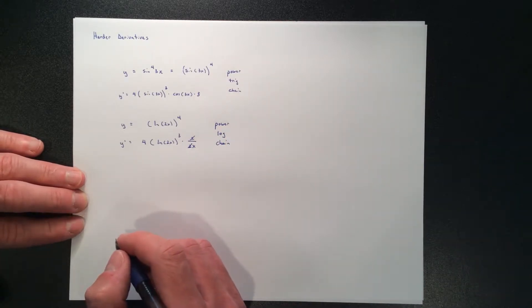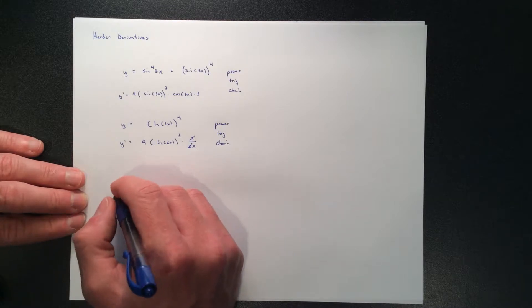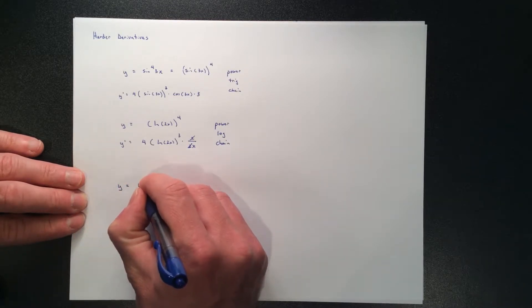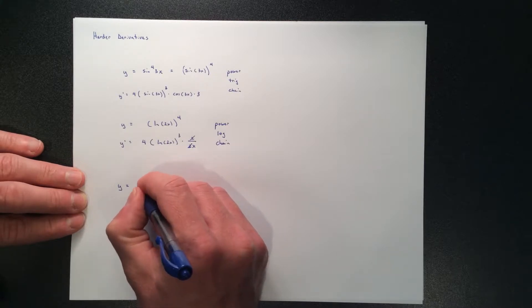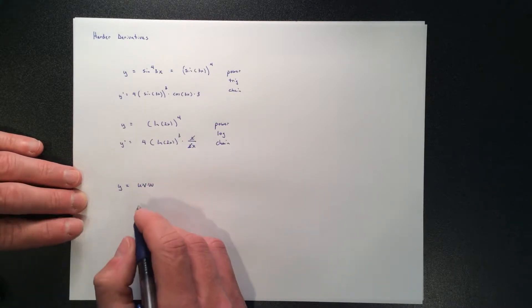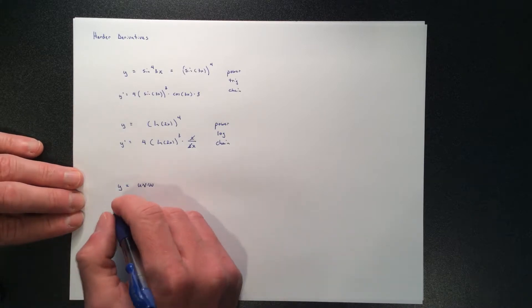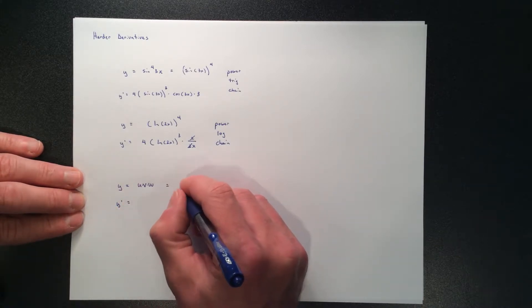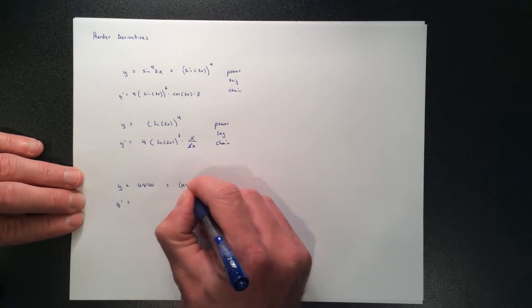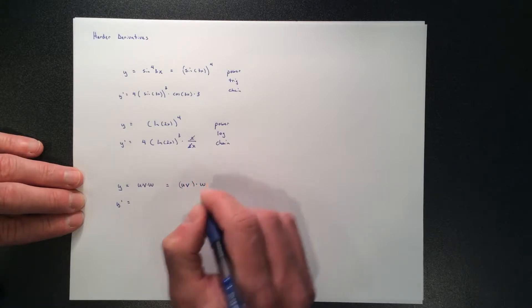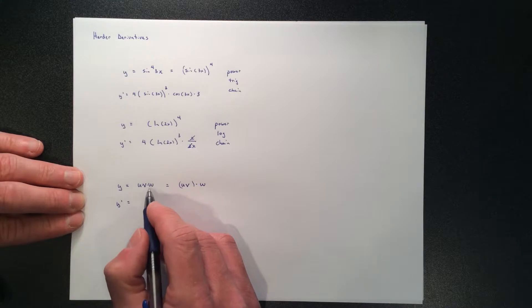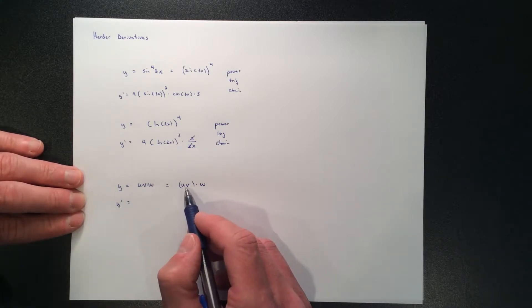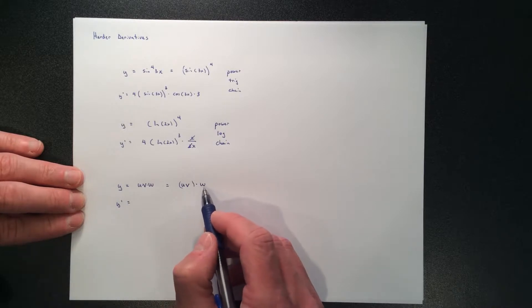Always using the chain rule the whole time. Now let's do a triple product rule. What if you had a function y that was u times v times w, where all three are their own functions? I'll do it in the abstract, then show an example. First, group this as the product of uv — which is itself a product — times another function w.